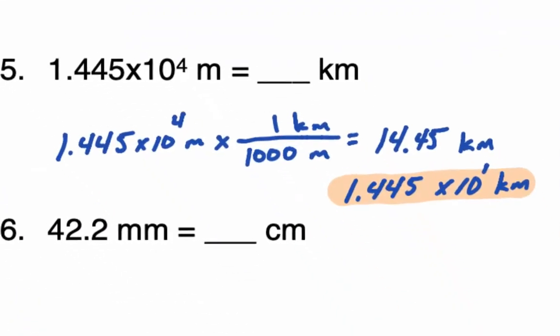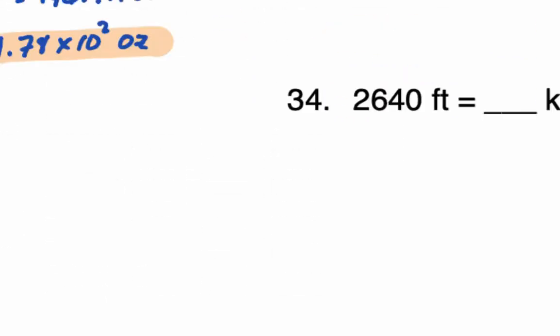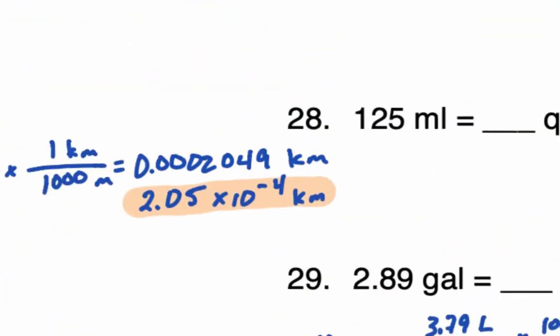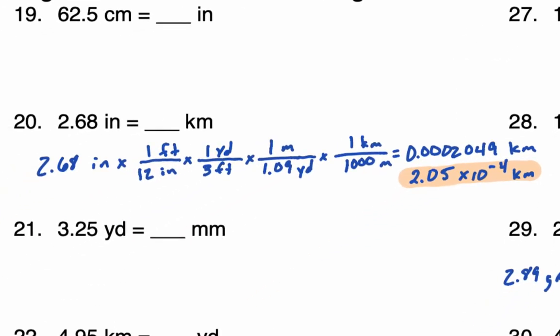We also have four significant digits in some answers. In number 20, we had three significant digits to begin with, so we need three in our final answer: 2.05 times 10 to the negative fourth. On your calculator in scientific notation mode it would have shown 2.049E-4. Because we only need three significant digits, the nine gets dropped and rounds up to give 2.05.